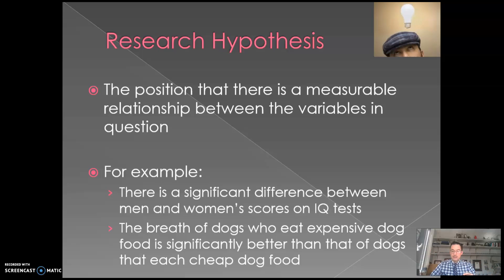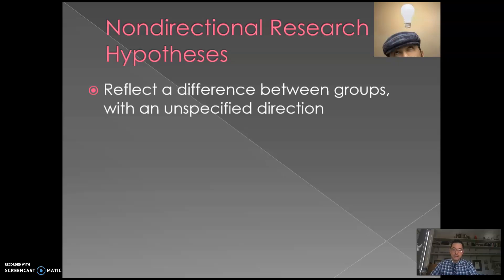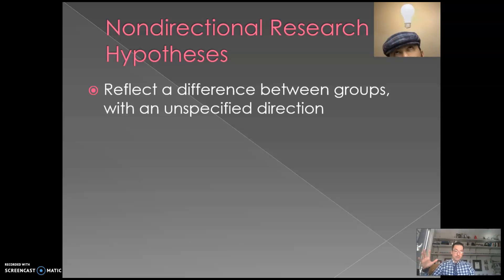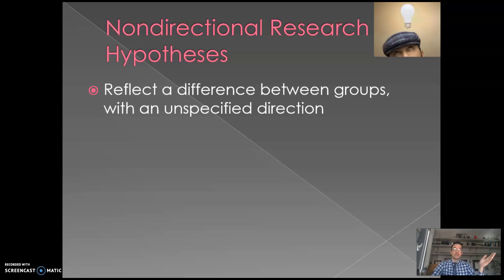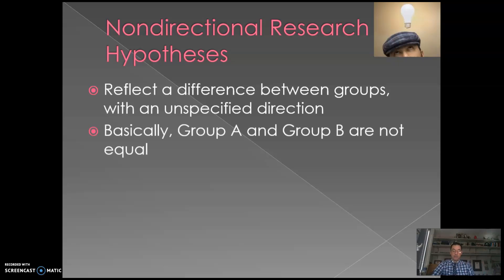Non-directional research hypotheses specify that there is a relationship between X and Y but don't indicate which direction it goes. Also important: we're not talking about causation here. We're not saying being male or female causes you to be smarter, or that cheap dog food causes worse breath. It's simply saying they are related. There are two different groups or variables with an unspecified relationship between them.